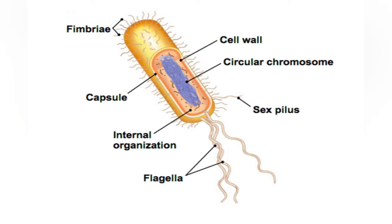Some aerobic bacteria form a very thin layer at the surface of a broth culture. This layer, called a pellicle, consists of many aerobic bacteria that adhere to the surface by their fimbria. Thus, fimbria allow the aerobic bacteria to remain both on the broth, from which they take nutrients, and near the air.